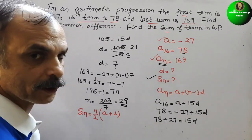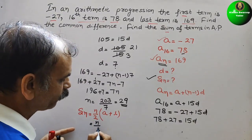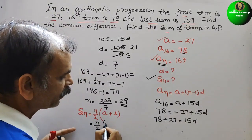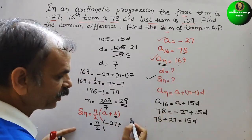So here comes A plus L. Now substitute here. So here what we will get? N by 2, A is minus 27 and L, L is your 169.